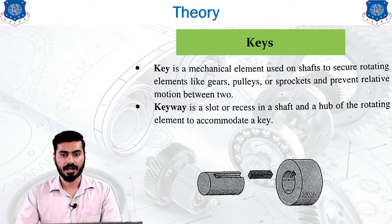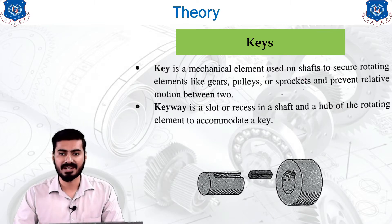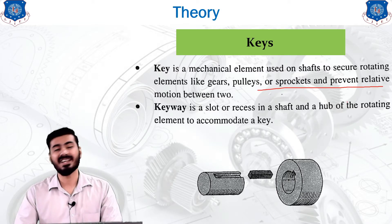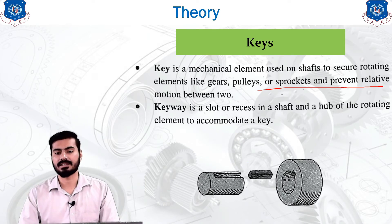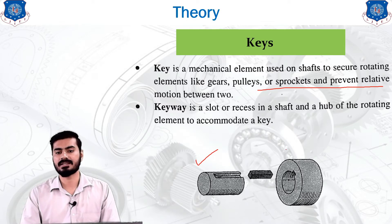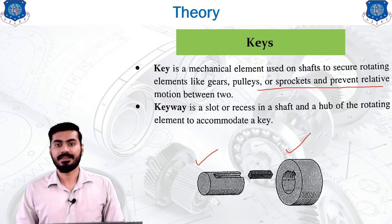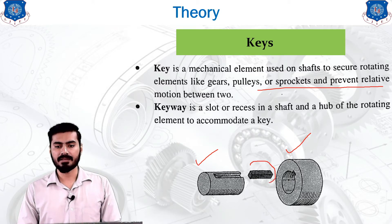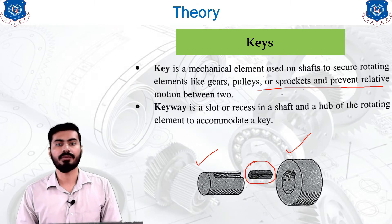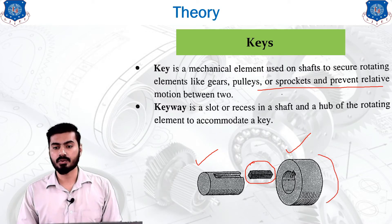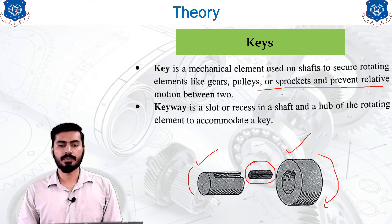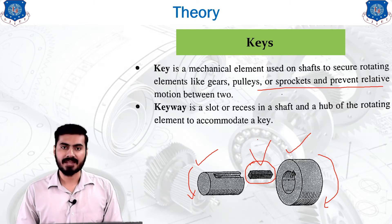Keys secure rotating elements like gears, pulleys, and sprockets, and prevent relative motion between them. If you are mounting a gear, pulley, or any hub on the shaft, the key is an element which prevents the relative motion between them — preventing the sliding motion of the hub on the shaft.